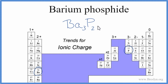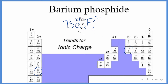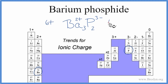But we should check our work to make sure we have the right formula. Let's put the charges back: barium is group 2, so that's 2+, and phosphorus is 3-. All the barium atoms' charges should cancel out the charge on the phosphorus atoms — we should have a net charge of 0. 3 times 2+ is 6+, and 2 times 3- is 6-, so 6+ and 6- adds up to 0. So this is the correct formula for barium phosphide.